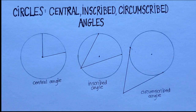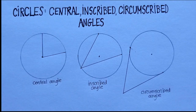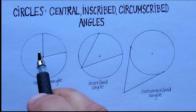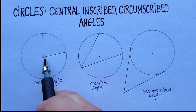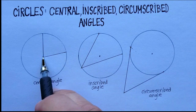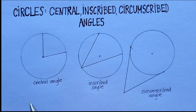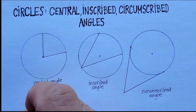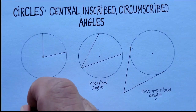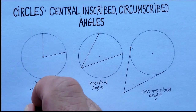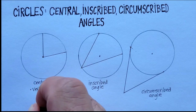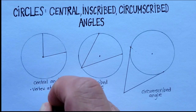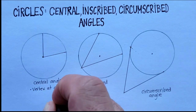Let's start with the central angle. The definition of a central angle is that the vertex of the angle is in the center of the circle. So the vertex is at the center of the circle — that's really important.